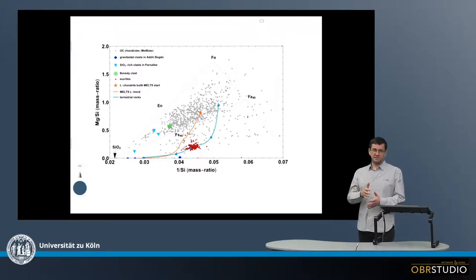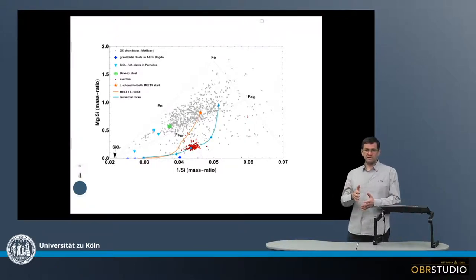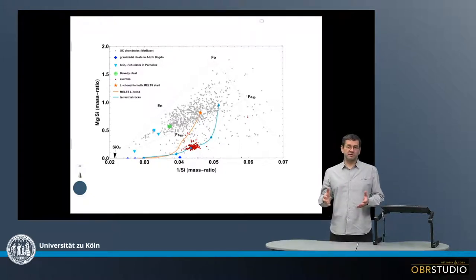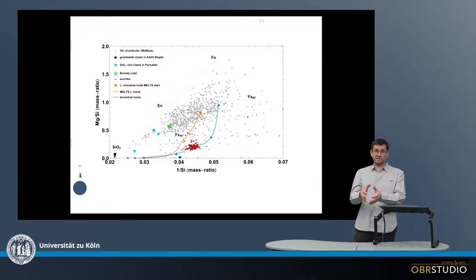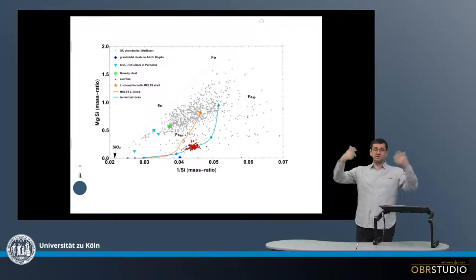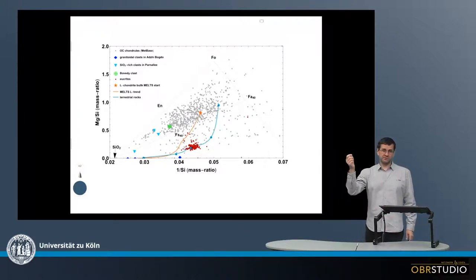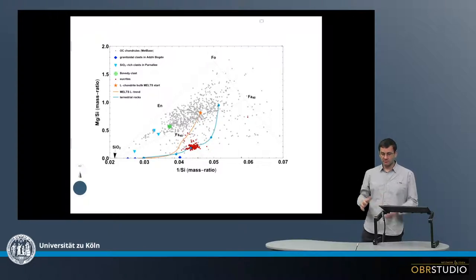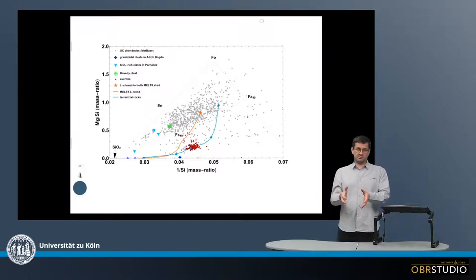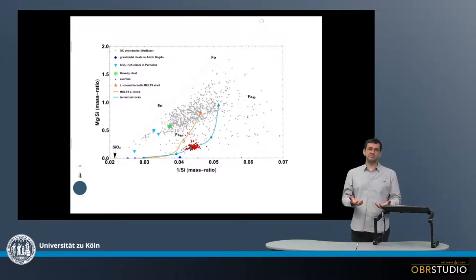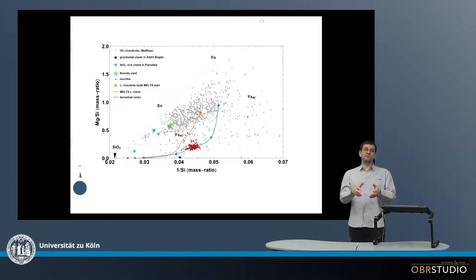Another set, fundamentally different from this, is that chondrules formed after the collision of two planetesimals — the material was ejected and then solidified into the small chondrules. Now in the second model, where asteroids or planetesimals are required, these planetesimals must have been molten, otherwise this would not work.